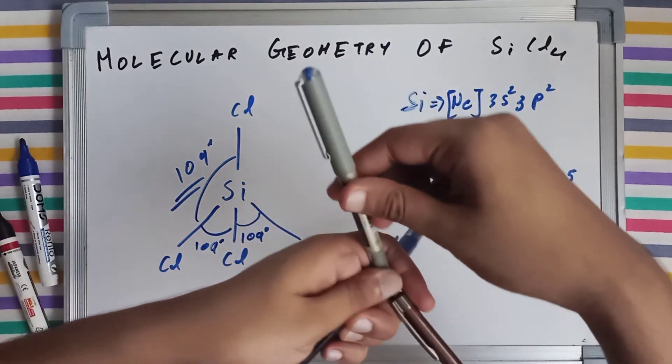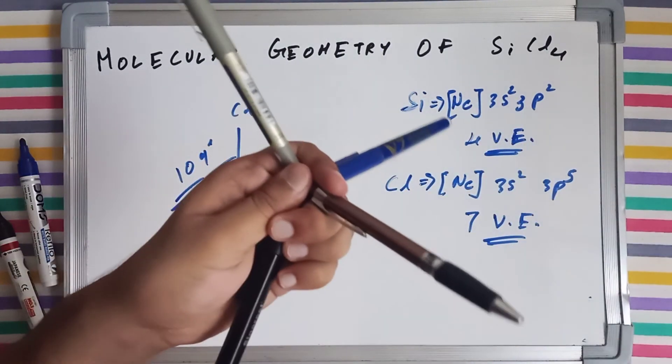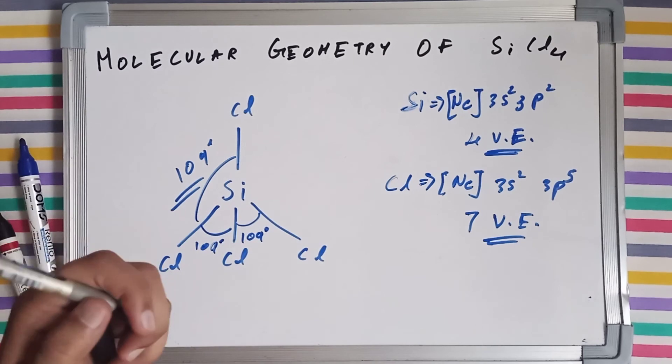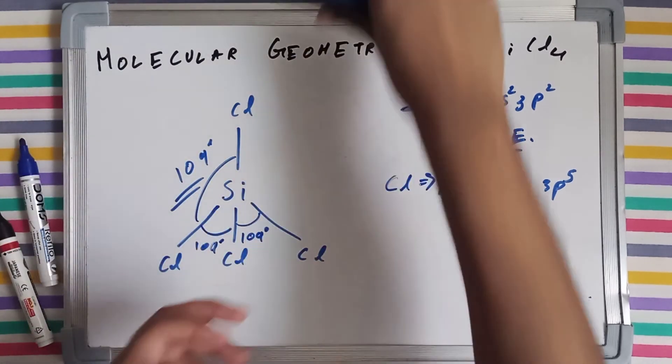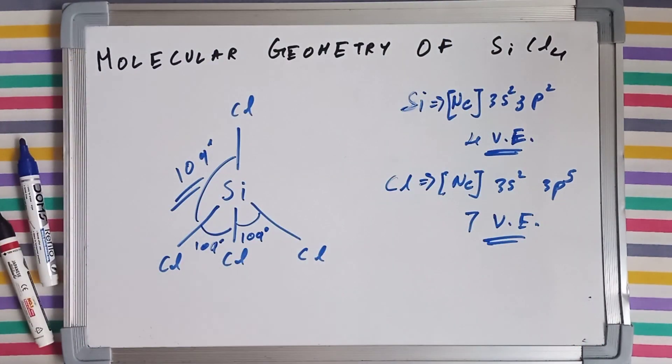Can you see that? At the junction, we have got silicon. So this was all about the molecular geometry of SiCl4, silicon tetrachloride. Thank you for watching, and I'll see you guys in the next video. Thank you so much.